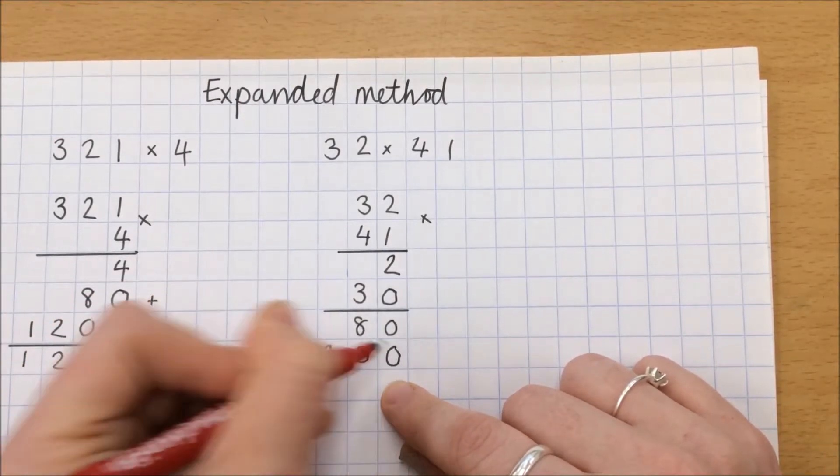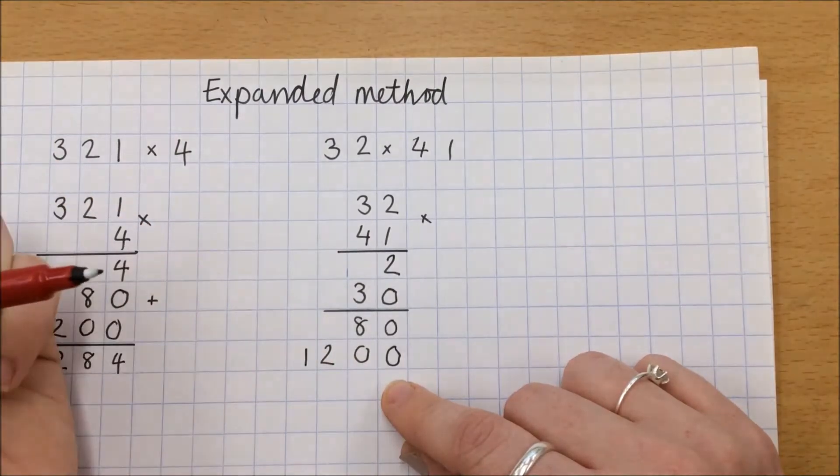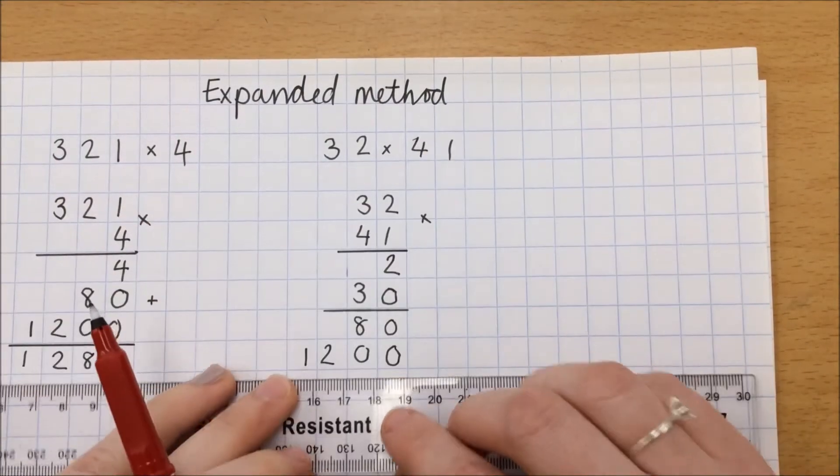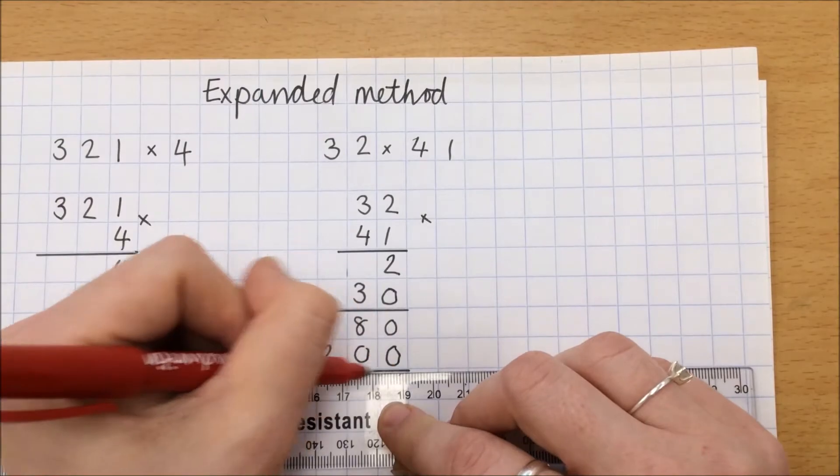It's really important at this point to make sure everything is lined up in the correct columns because otherwise we're going to have difficulties when we add everything up.